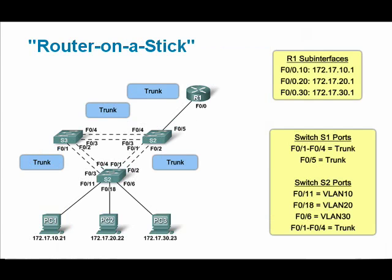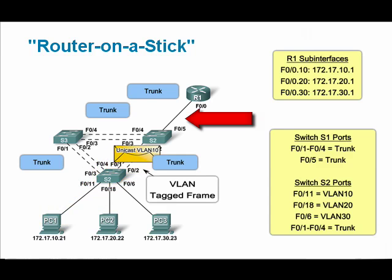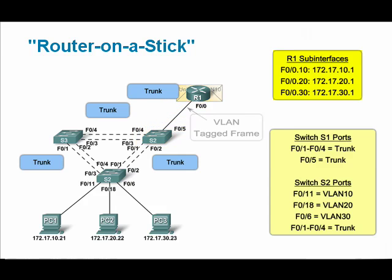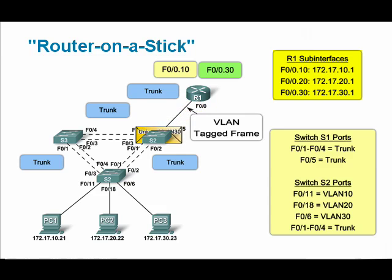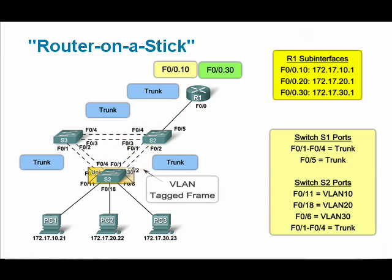Router-on-a-stick VLAN configuration enables networkers to configure a single trunk port between the switch network and the router, regardless of the number of VLANs. The single physical router interface is configured into multiple logical sub-interfaces. In this example, you can see that the F01 physical interface has been divided into three logical sub-interfaces, one for each VLAN. The IP address of each sub-interface serves as the default gateway for its respective VLAN.